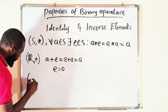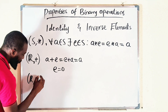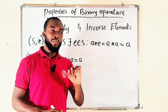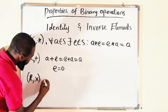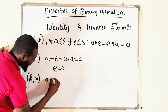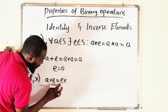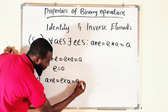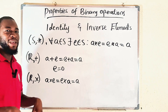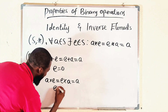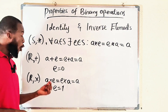Now let's take multiplication. What is that element in the set of real numbers which, when you multiply it by any element within the set, leaves it unchanged? So a multiplied by e equals e multiplied by a equals a. What number times five makes it remain five? Definitely one. Therefore, one is the identity element in the set of real numbers under multiplication — the multiplicative identity.